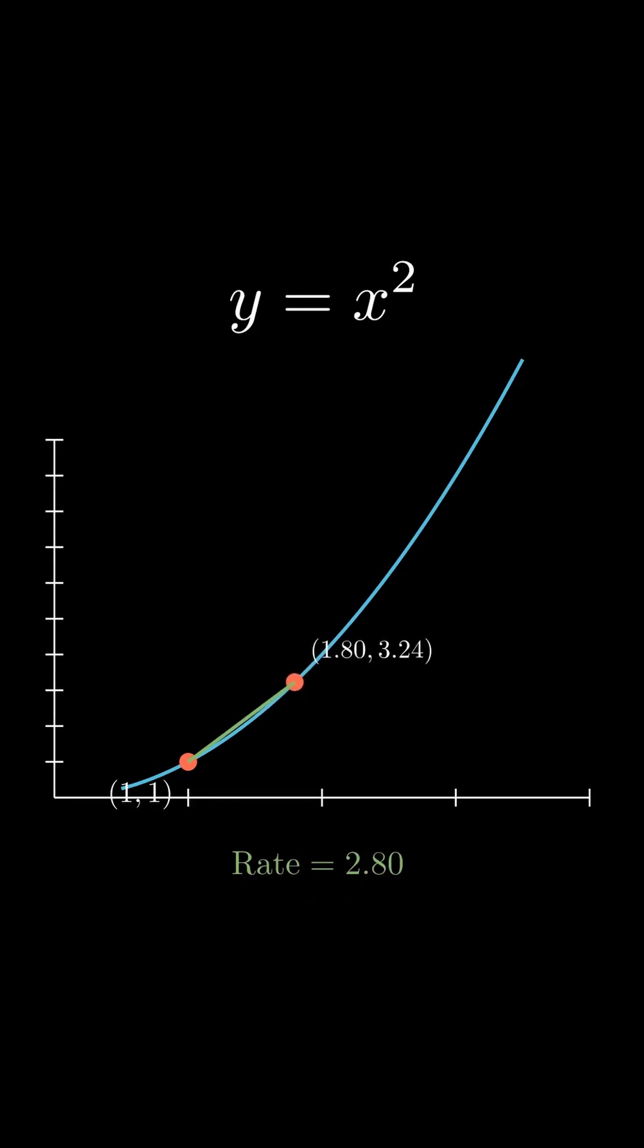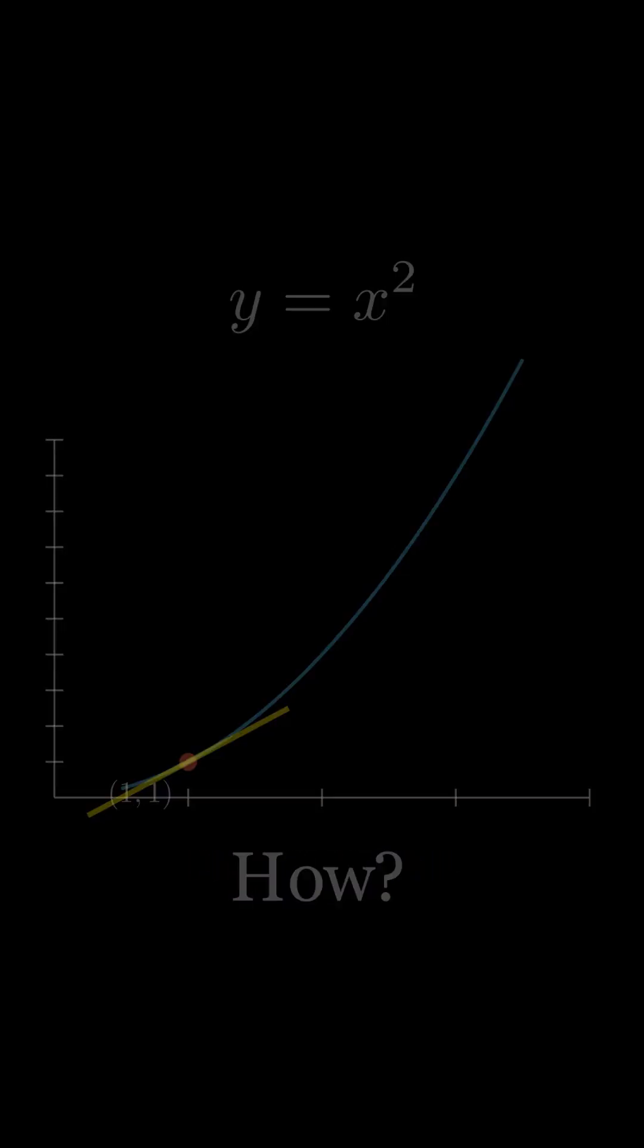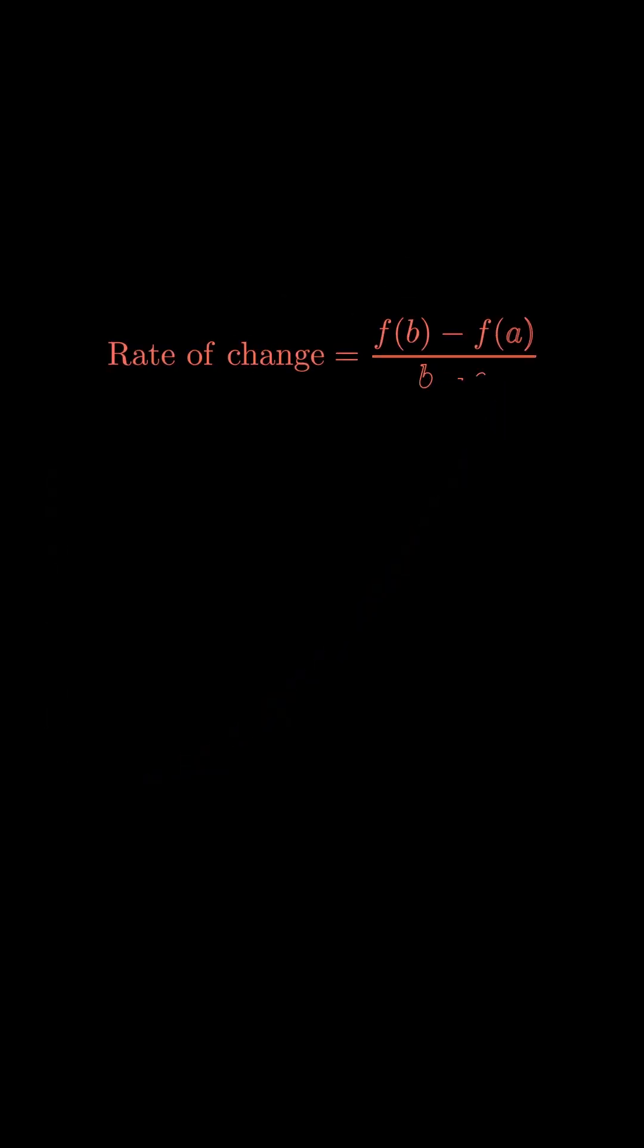But if we bring these two points together, forming a tangent line at (1,1), we can see that the rate of change approaches 2. But how? How can you calculate a rate of change at one point? Because it requires two points.